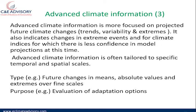Because you are looking far into the future, you do not have a lot of confidence, so you need to do a lot of analytical work. Advanced climate information is often tailored to specific temporal and spatial scales — future changes in the means, absolute values, and extremes over finer scales. The purpose of advanced climate information is sometimes to evaluate adaptation options: what adaptation options do you want to put in place in the next 50 years? This requires a lot of scenario modeling.